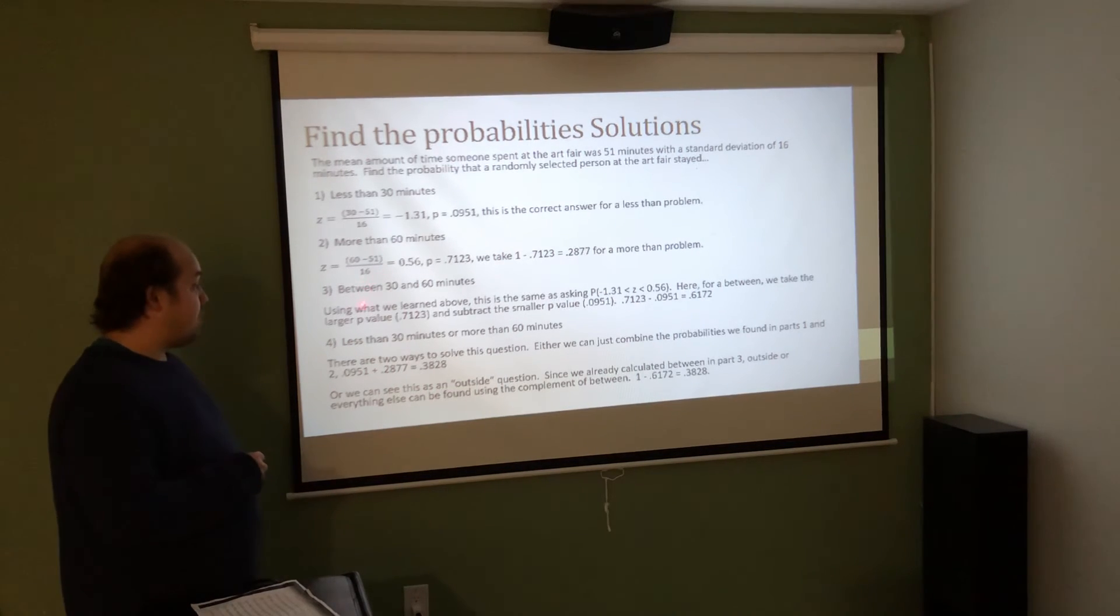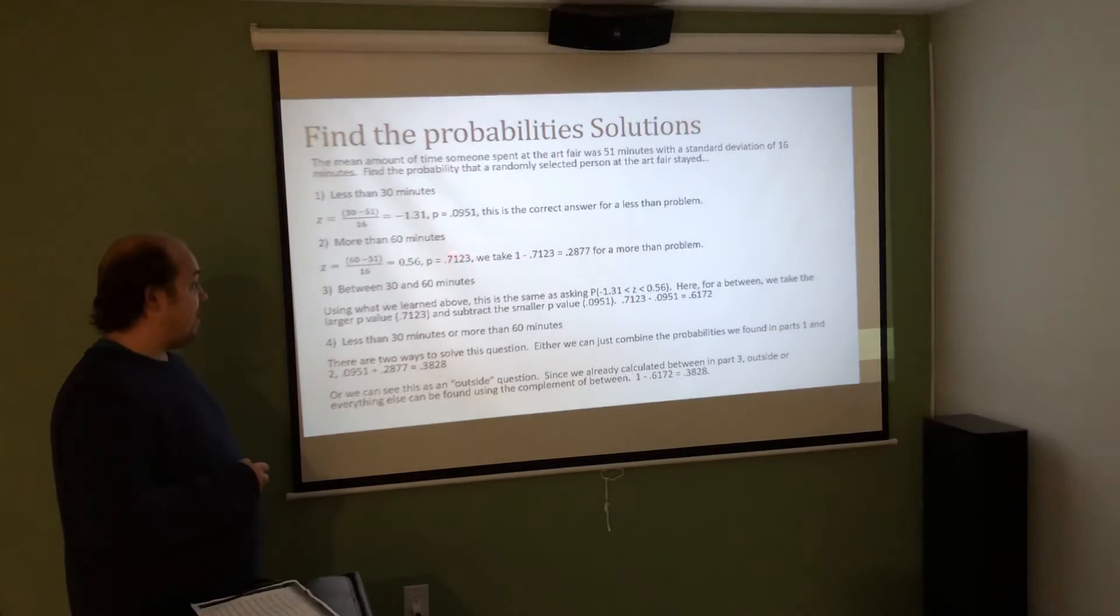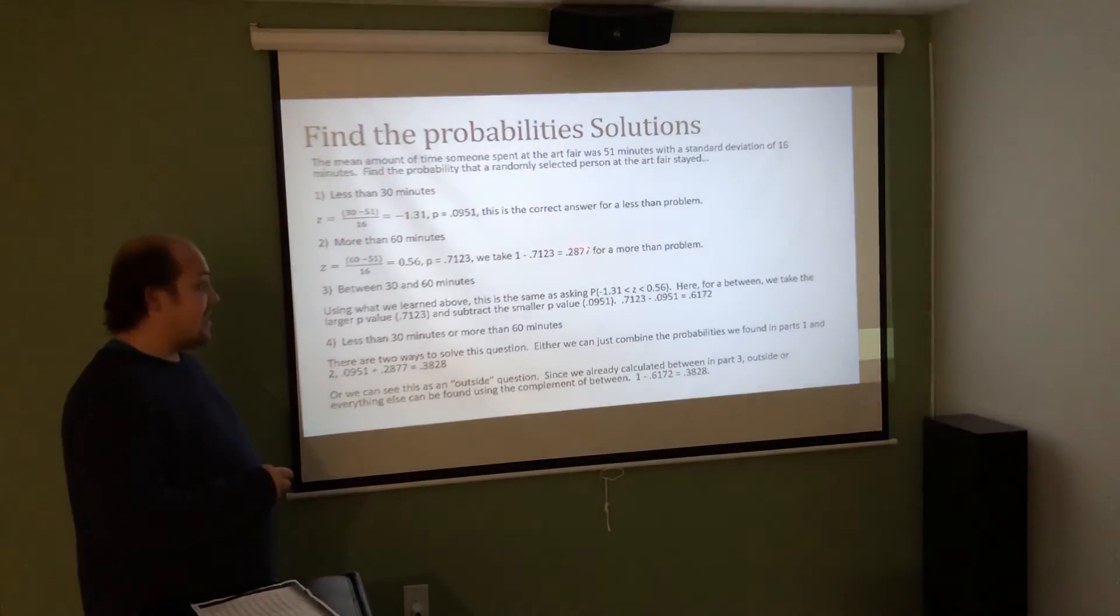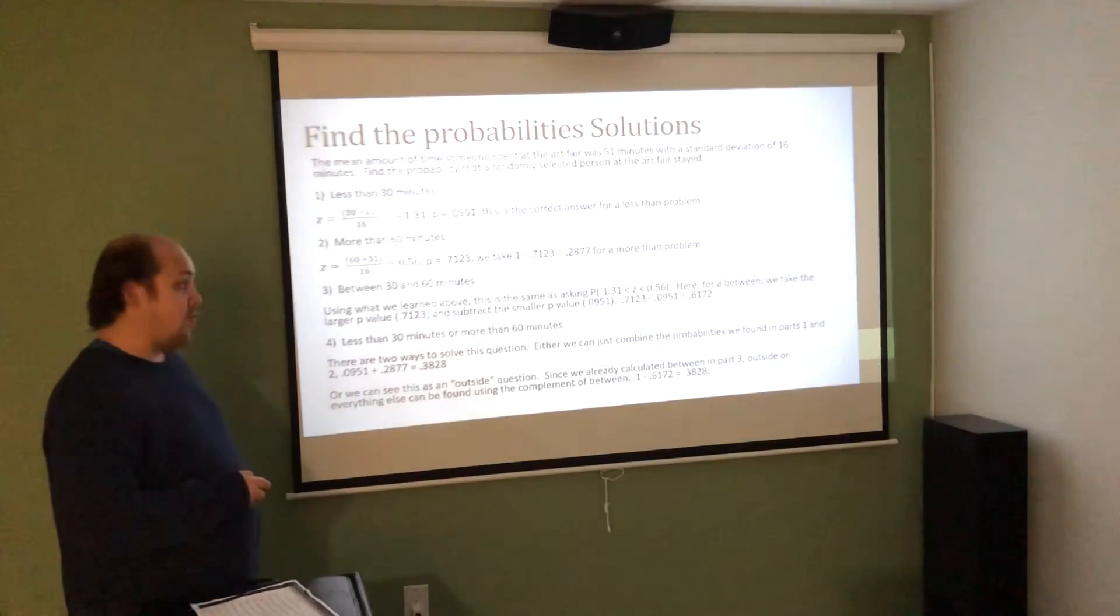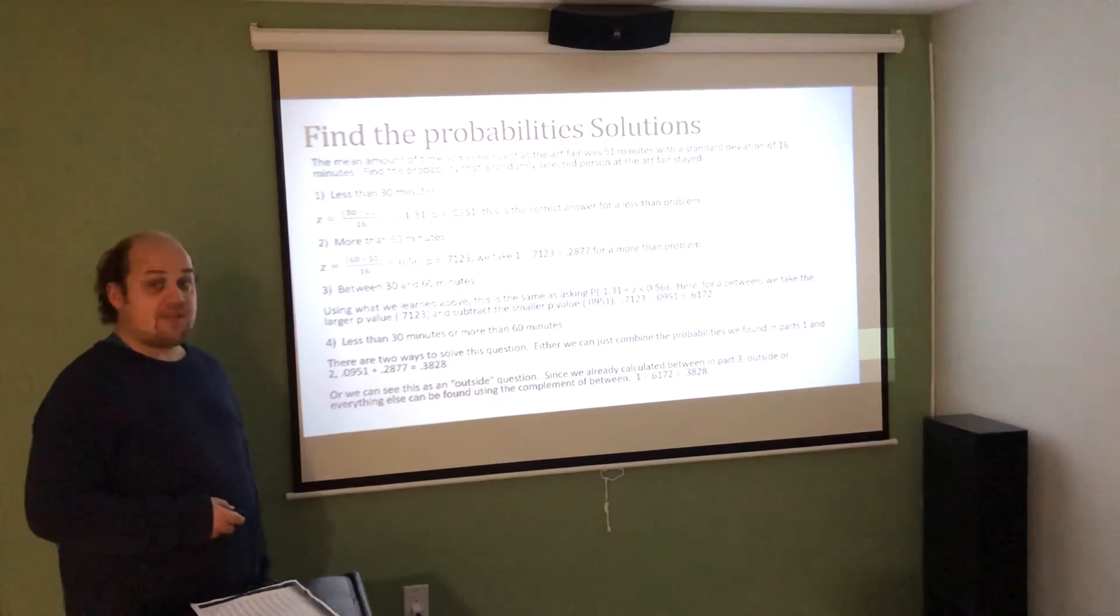When I'm looking for between 30 and 60, I take the larger p-value that I found, 0.7123. Notice I'm using what the table value was, not the result of my subtraction. I then subtract from that the smaller p-value, 0.0951. When I do that, 0.7123 minus 0.0951 gets me to my final answer, 0.6172.